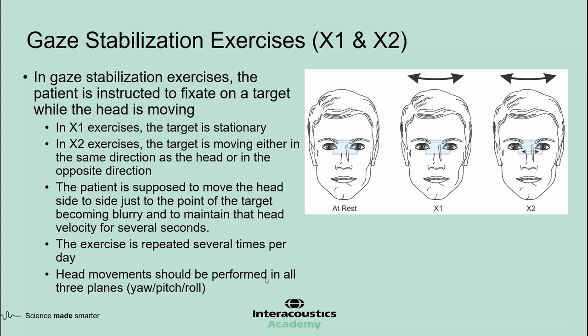X1 and X2 exercises are gaze stabilization exercises that can improve coordination of head and eye movements. The patient is instructed to focus on a target such as a business card with writing on it, held at arm's length. The patient starts moving the head side to side slowly and increases the velocity to the point where the writing starts to get blurry. The patient stays around that velocity for several seconds, repeating the exercise a few times. The aim is that the head velocity at which things become blurry increases over time and the patient's dynamic visual acuity improves.